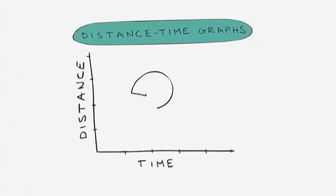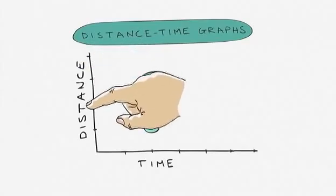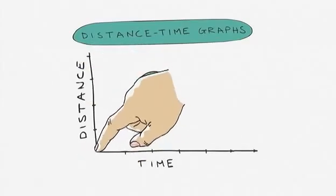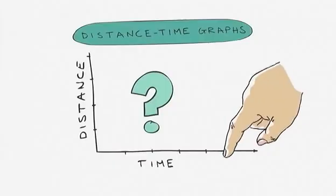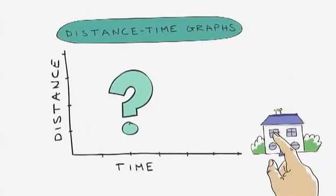These graphs can be used to represent a journey. Are we nearly there yet? The vertical axis shows the distance travelled from the start point. The horizontal axis records the time. All we need now are the journey details.